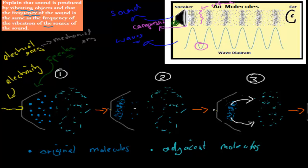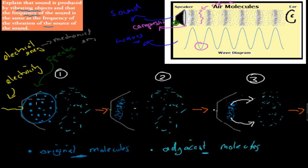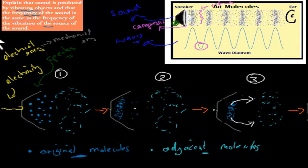What's happening here is I've chosen two different colors of molecules. One of them are the original molecules in dark blue, whereas the adjacent molecules — the molecules next to it — are in lighter blue. The original molecules are at the moment inside the speaker, and the adjacent molecules are just next to it. They're basically just air — oxygen molecules, nitrogen, carbon dioxide, whatever is in the air.